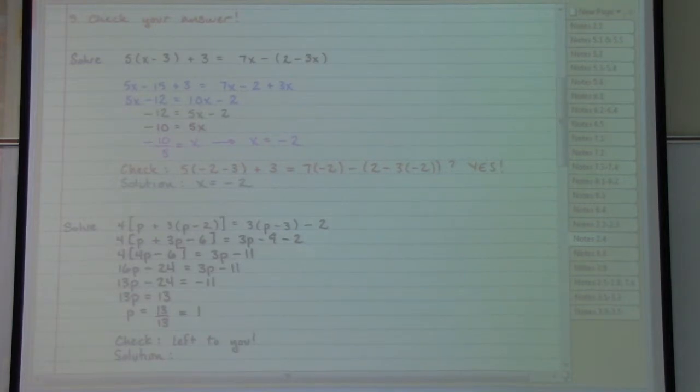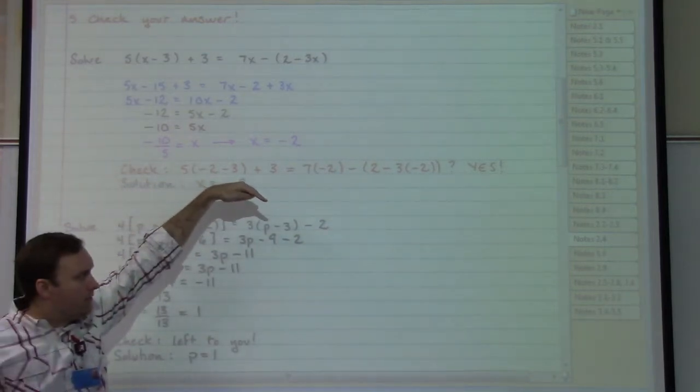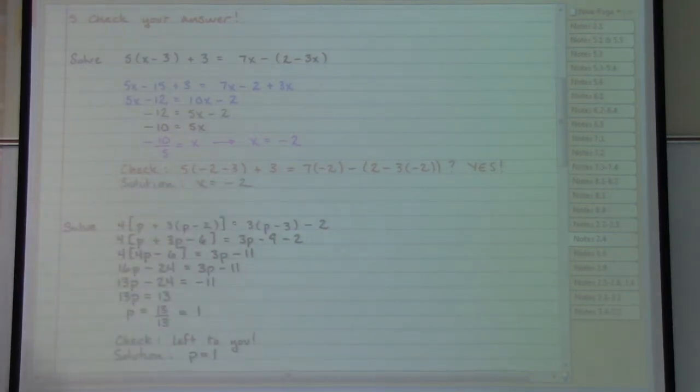So it seems that we are getting an answer p equals 1. If you go through the time and trouble of checking that, again we always go back to the original equation to check. So if you take the time and trouble to go back to the original equation, at any place you see a p you put in a 1 and see how everything on the left side plays out, see how everything on the right side plays out. If you get the same number on the left side as you do on the right side then you do in fact have the correct answer. The correct solution p equals 1.